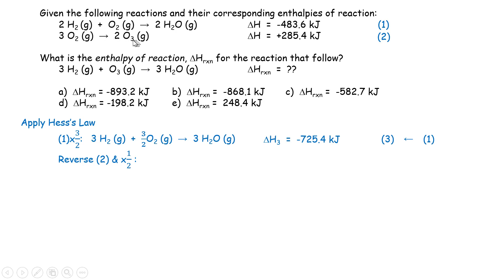First change the direction. Ozone would become the reactant and O2 would become the product. The sign of ΔH needs to be negative now. And this is the result after multiplying one half. Two ozone times one half becomes just one ozone molecule. And then three oxygen molecules multiplied by one half gives three halves oxygen.